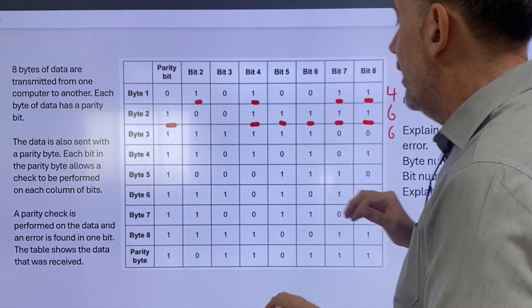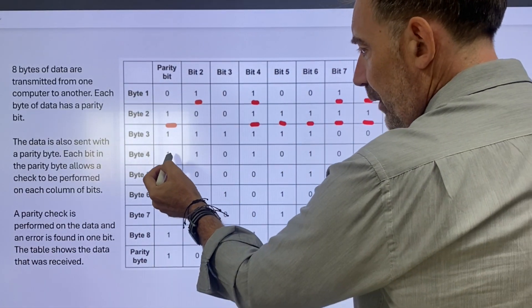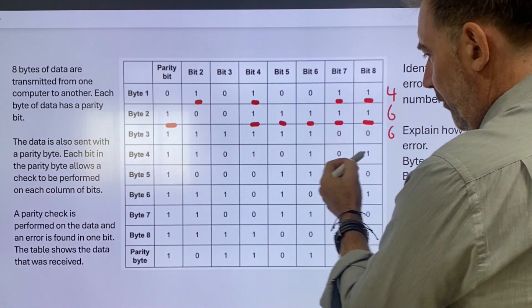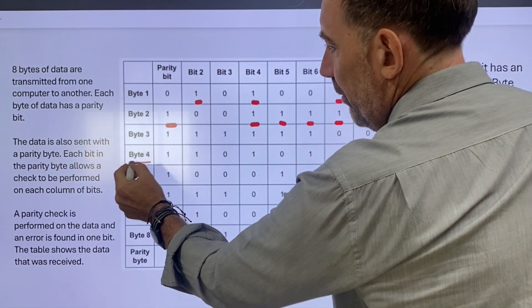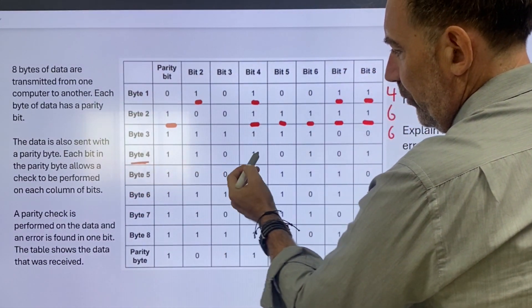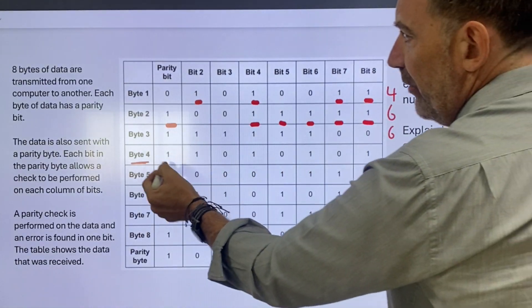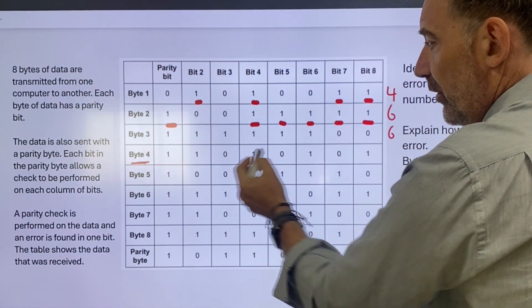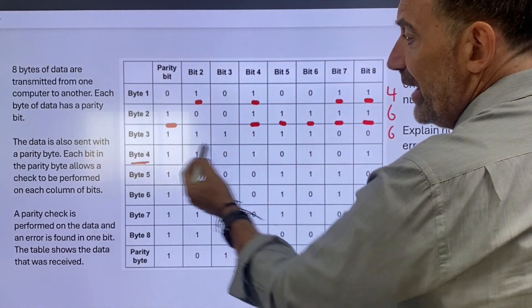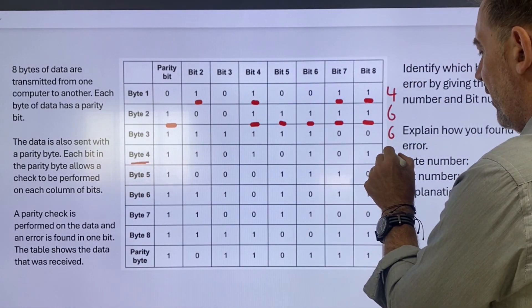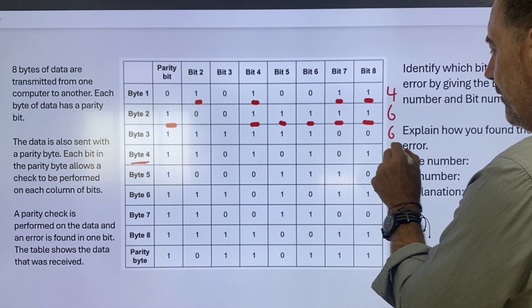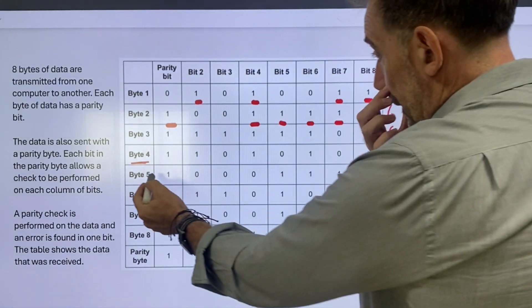We're using even parity. So we'll keep going down. One, two, three, four, five. Ah, maybe a problem here. One, two, three, four, five. We've added a parity bit. But the byte was already even. So that's five. Problem. Byte five.